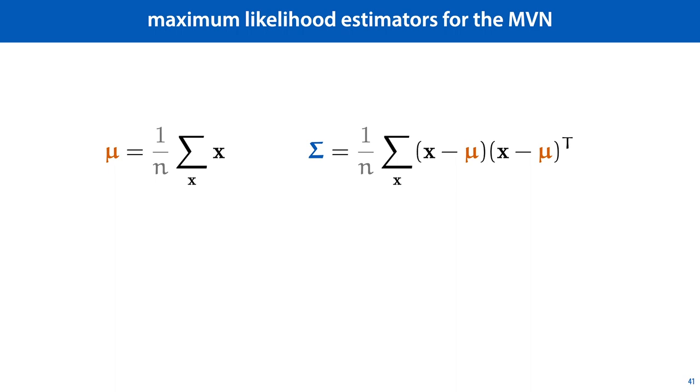And if we have weighted data, we simply modify the estimators by making the sum a weighted sum, and by making the denominator the sum of all the weights instead of the number of instances in our data.